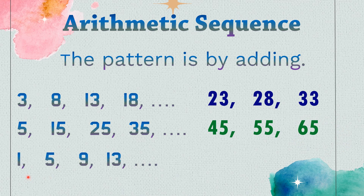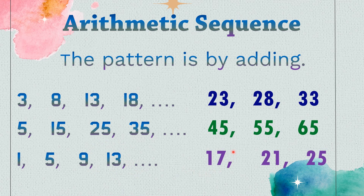Third example: 1, 5, 9, and 13. The number to be added is 4. So: 1 plus 4 is 5, 5 plus 4 is 9, 9 plus 4 is 13. The next three numbers after 13 are: 13 plus 4 is 17, 17 plus 4 is 21, 21 plus 4 is 25.